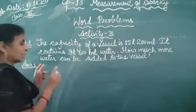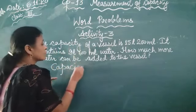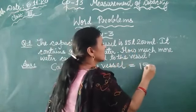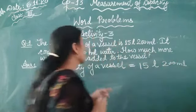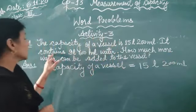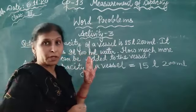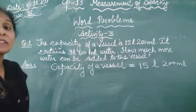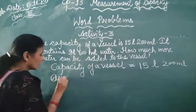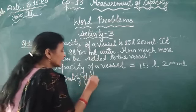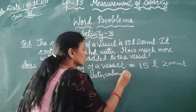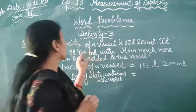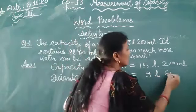Now we write a statement. This is the capacity. Capacity of a vessel is equal to 15 litre 200 millilitre. And it contains 9 litre 600 millilitre water. Quantity of water contained in the vessel is 9 litre 600 millilitre.